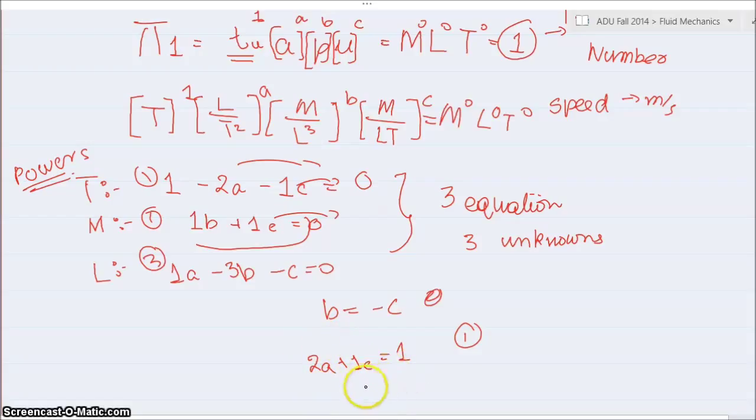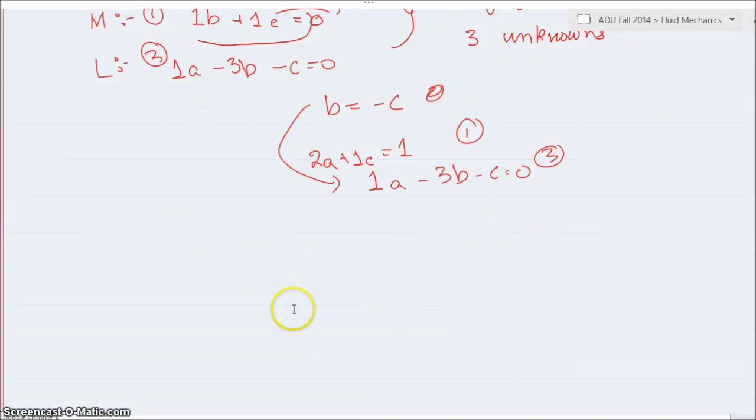And my third equation says 1a minus 3b minus c is equal to 0. This is my third equation. So if I put this in this equation, I get 1a minus 3, and instead of b I'm putting the equation, minus c minus c is equal to 0.